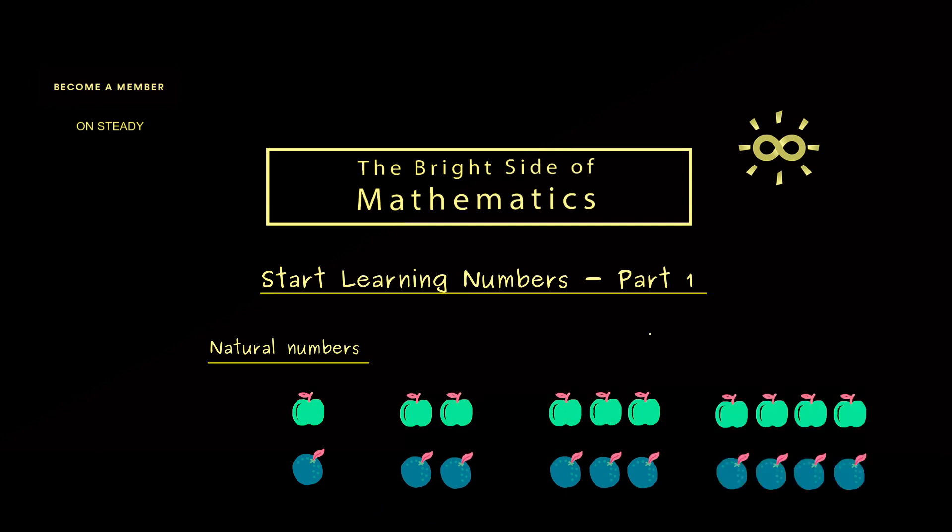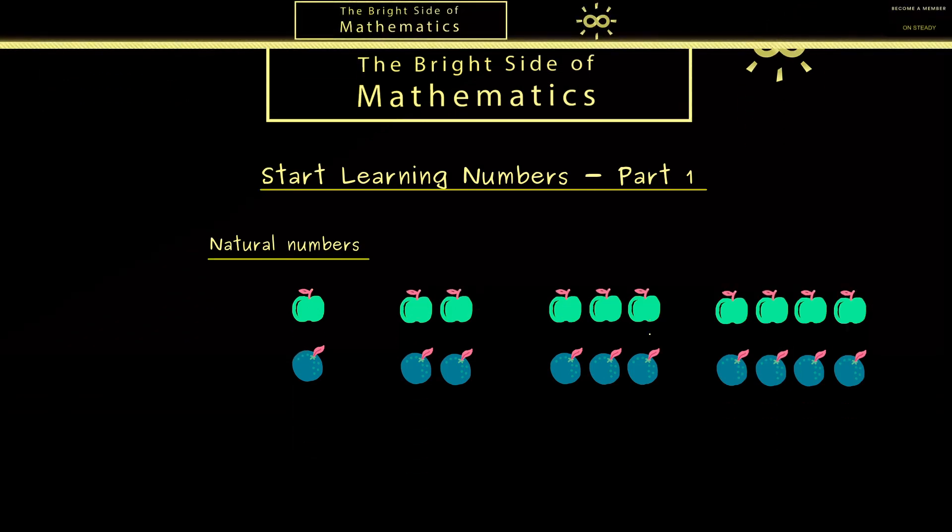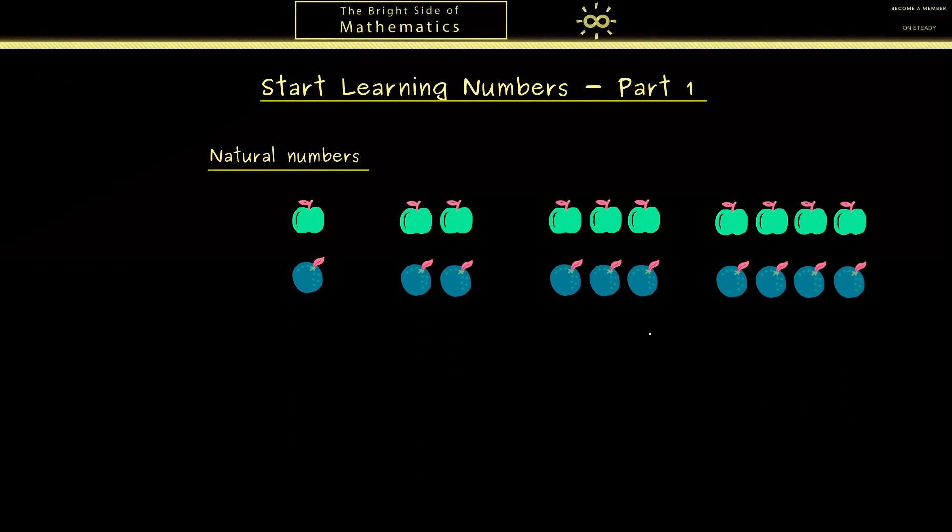So they just represent different sizes we can have for collections of some objects. Therefore it makes sense to introduce new symbols for these representations.